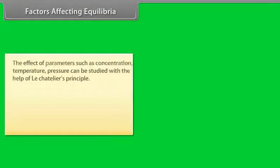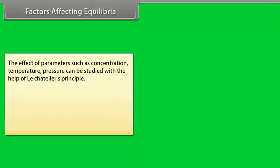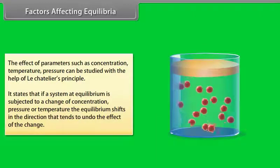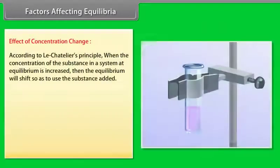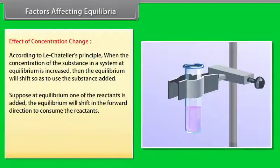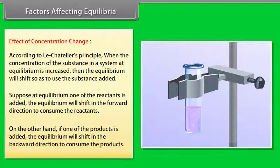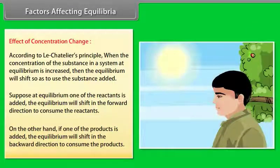Factors Affecting Equilibria — Le Chatelier's Principle: The effect of concentration, temperature, and pressure can be studied using Le Chatelier's principle, which states that if a system at equilibrium is subjected to a change in concentration, pressure, or temperature, the equilibrium shifts in the direction that tends to undo the effect of that change. Effect of concentration change: if a reactant is added, equilibrium shifts in the forward direction; if a product is added, equilibrium shifts in the backward direction. For example, on a humid day we sweat more because the surrounding air has a large amount of water vapour.